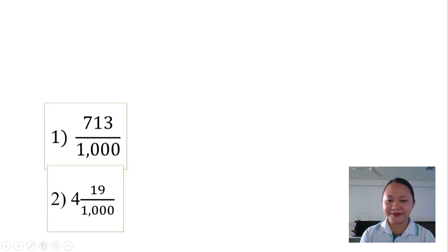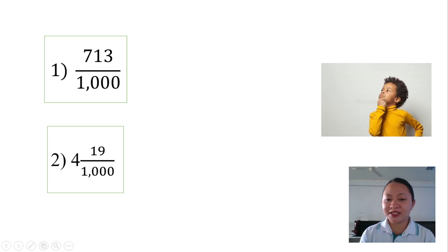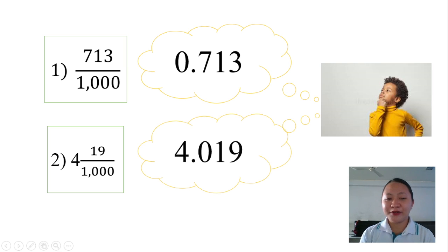Let's do an activity. Convert these fractions in decimals. Well done. 7 and 13 over 1000 is equal to 0.713. What about the second item? That's right. It's 4.019. Good work, everyone.